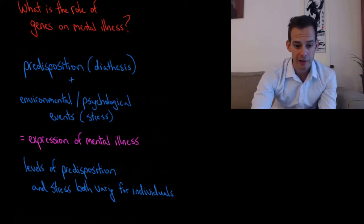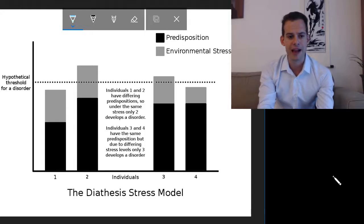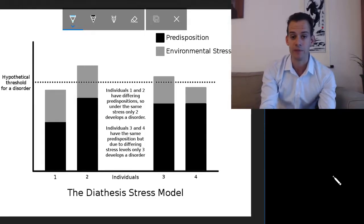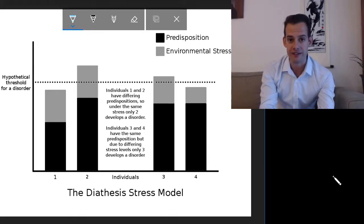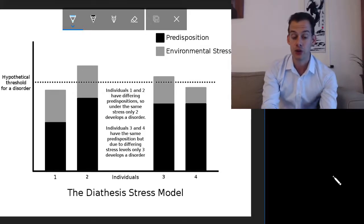Here's a diagram that I've made to help explain this diathesis stress model. What you can see here is we have this idea of a hypothetical threshold for a particular disorder. If you cross this hypothetical threshold then you develop the disorder, and if you don't then you don't develop the disorder.